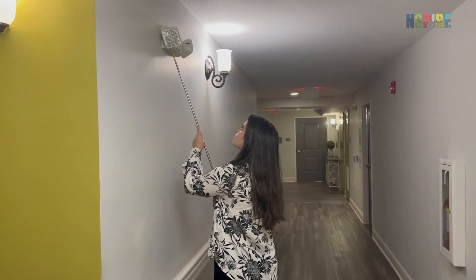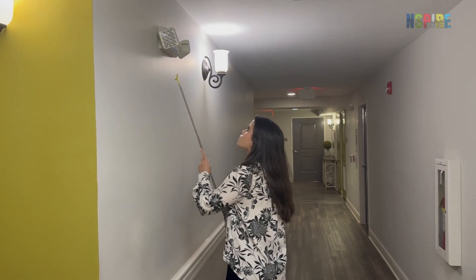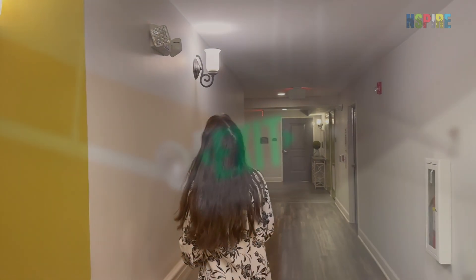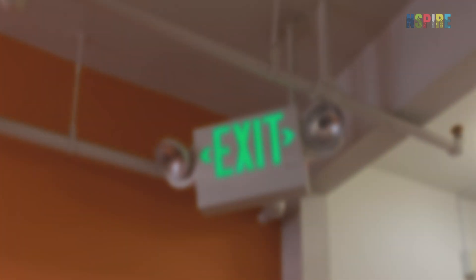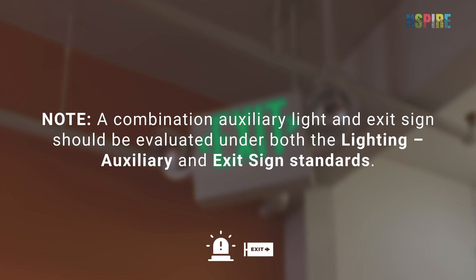Cite a deficiency for any damaged, missing, or inoperable lights. Note: a combination auxiliary light and exit sign should be evaluated under both the lighting auxiliary and exit sign standards.